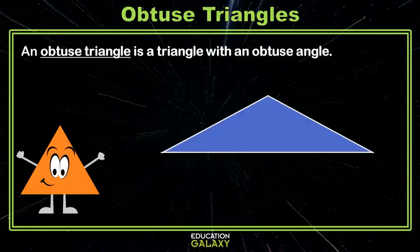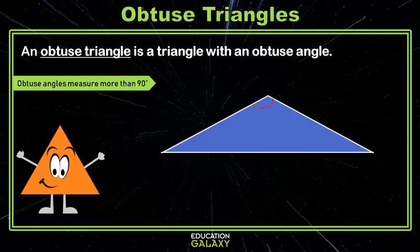An obtuse triangle is a triangle with an obtuse angle. Obtuse angles measure more than 90 degrees.